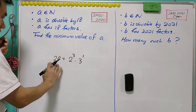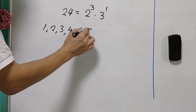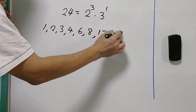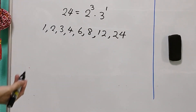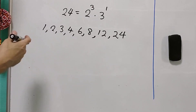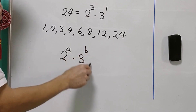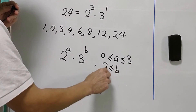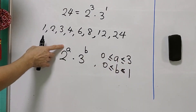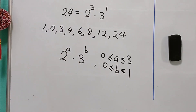The factors of 24 are 1, 2, 3, 4, 6, 8, 12, and 24 — eight factors in total. Each factor is of the form 2 to the power of A times 3 to the power of B, where A can be between 0 and 3, and B is either 0 or 1. So A has 4 choices and B has 2 choices, giving 4 times 2 equals 8 factors.